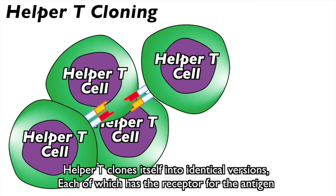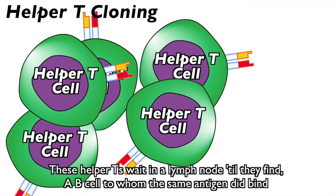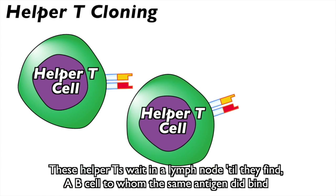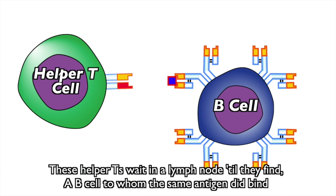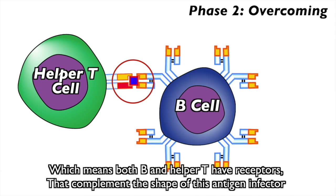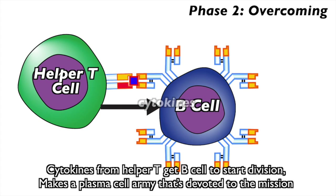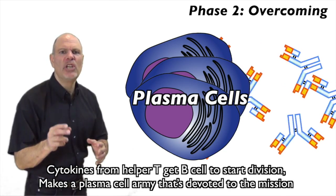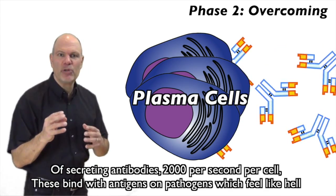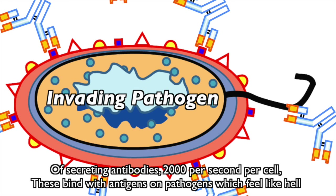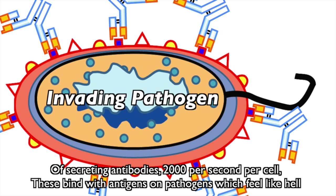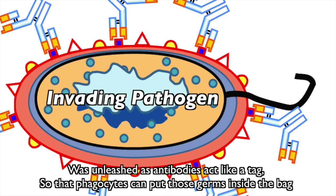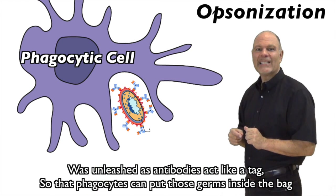Helper T clones itself into identical versions, each of which has the receptor for the antigen. These helper T's wait in a lymph node until they find a B-cell to whom the same antigen did bind — meaning both B and helper T have receptors that complement the shape of this antigen. Cytokines secreted from helper T get the B-cell to start division, making a plasma cell army devoted to secreting antibodies — 2,000 per second per cell. These bind with antigens and our pathogens would feel like hell was unleashed.